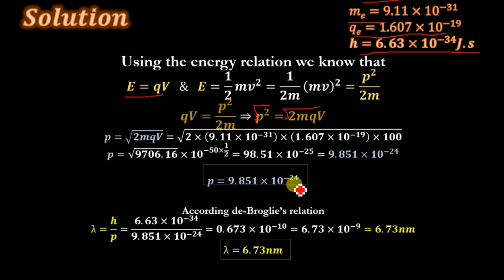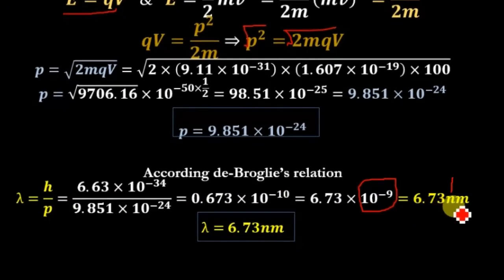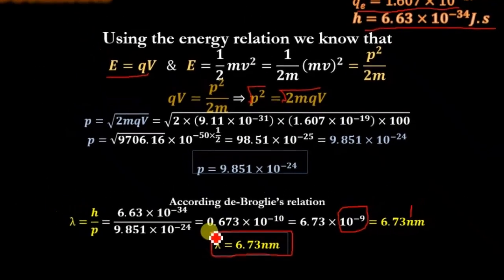Putting the values for p and h, we get 0.673 × 10^-10, and finally we get λ = 6.73 nanometers. This is the required result; we have determined the value of lambda.